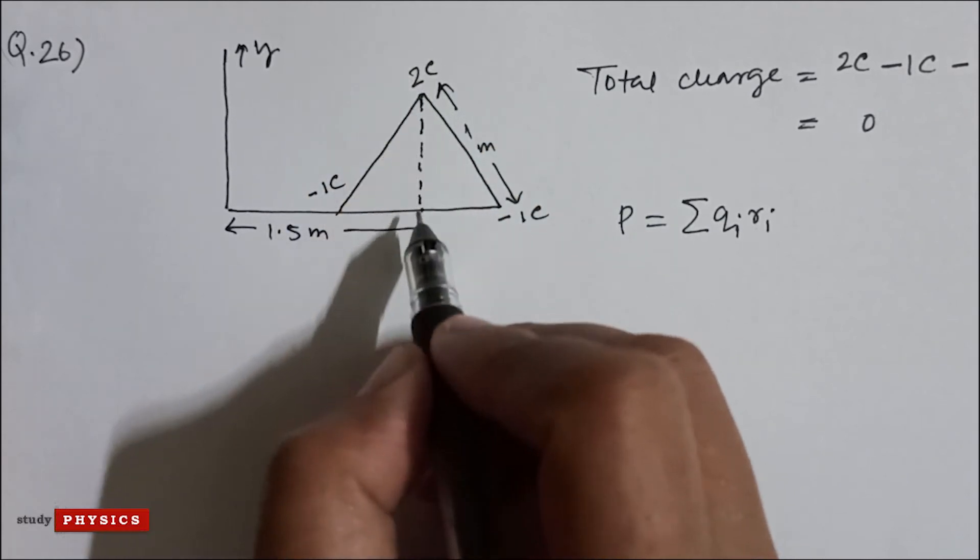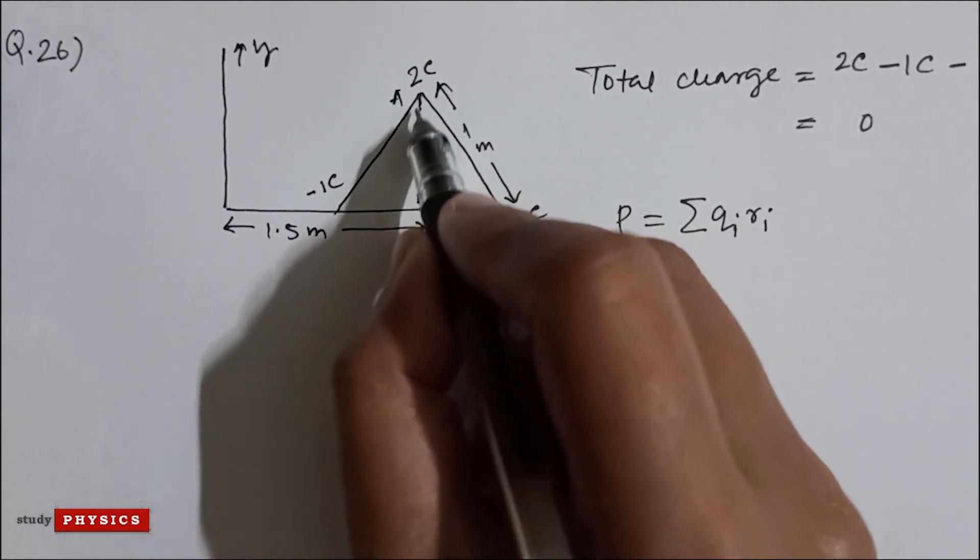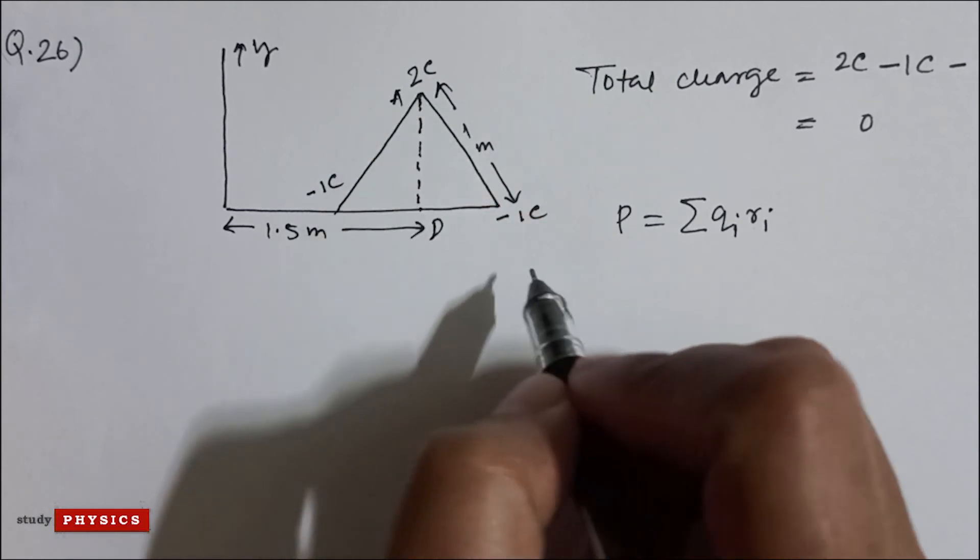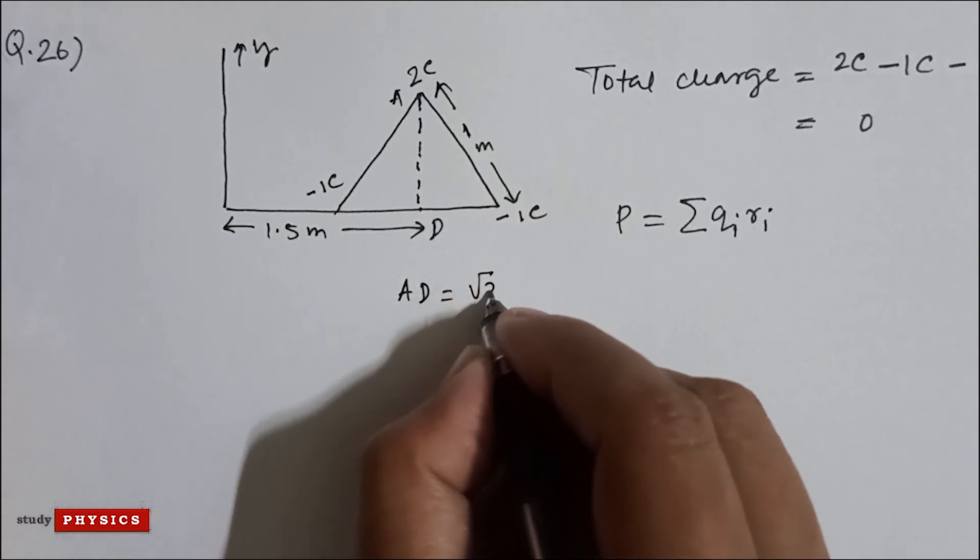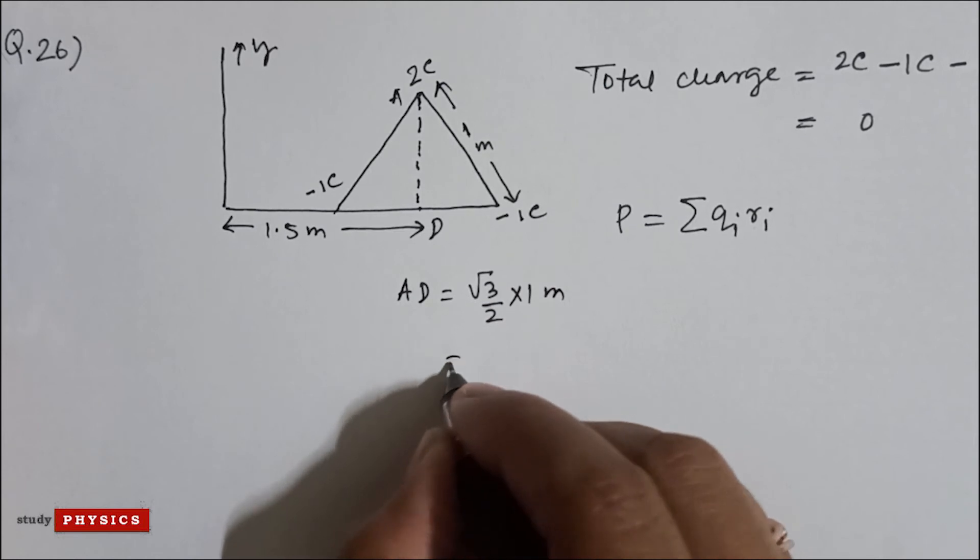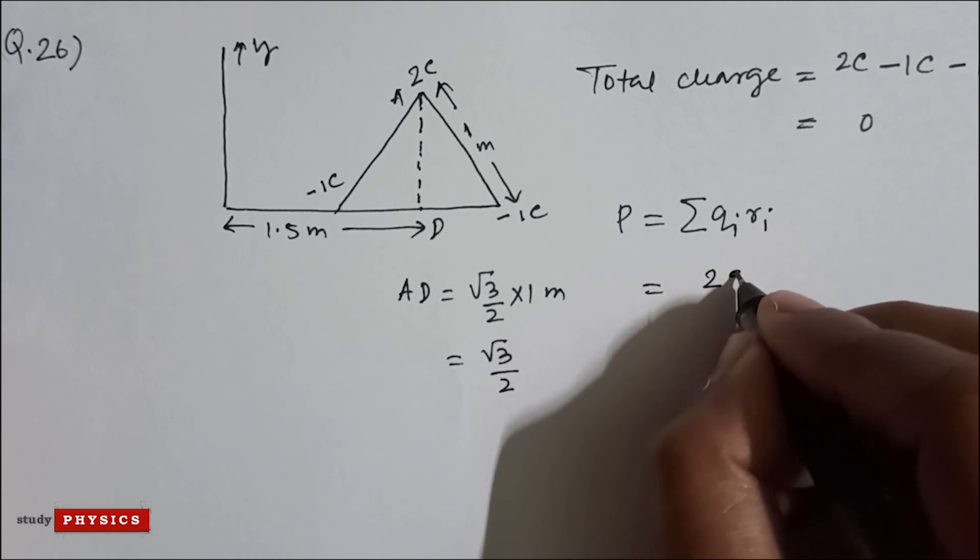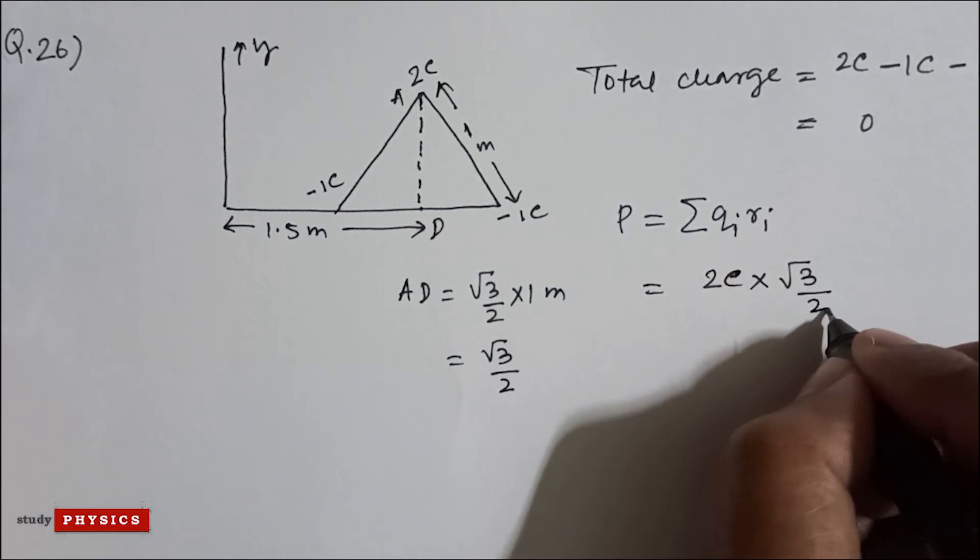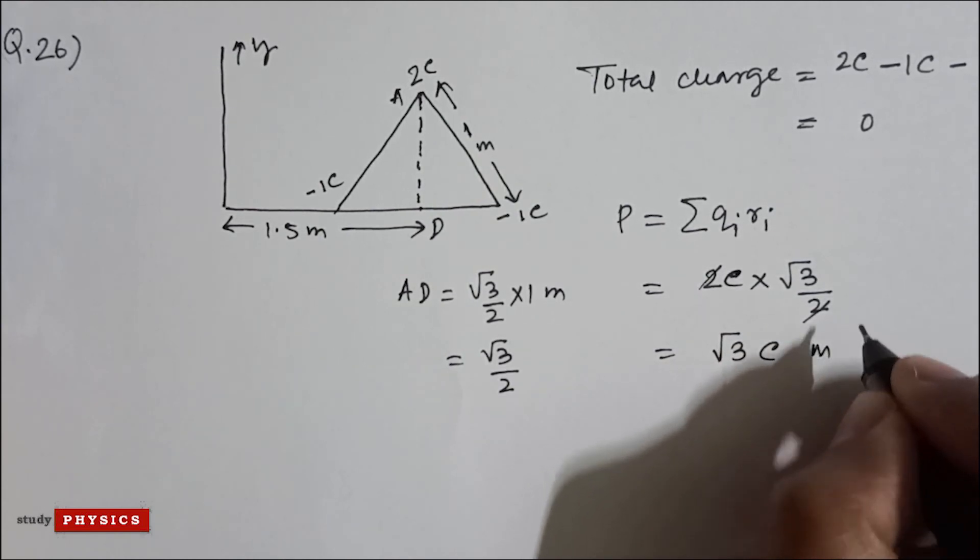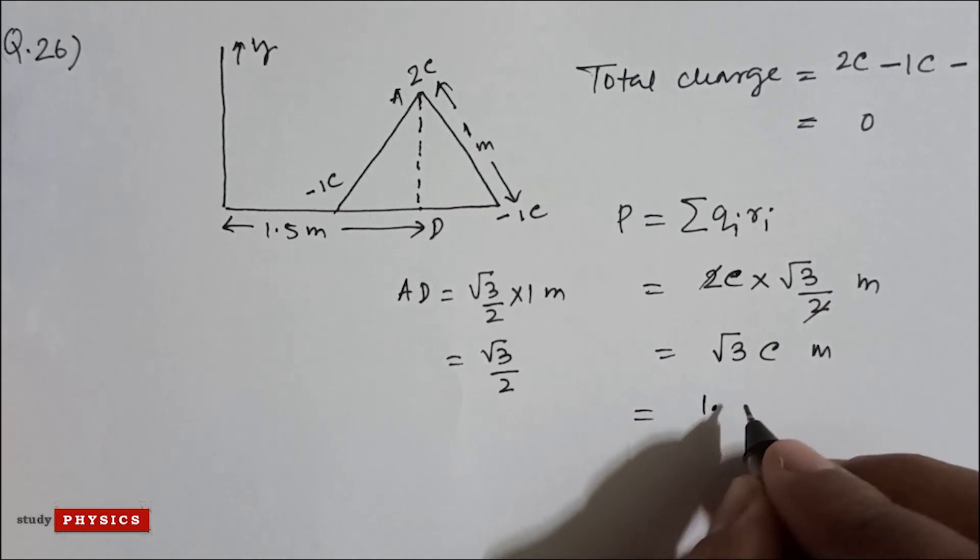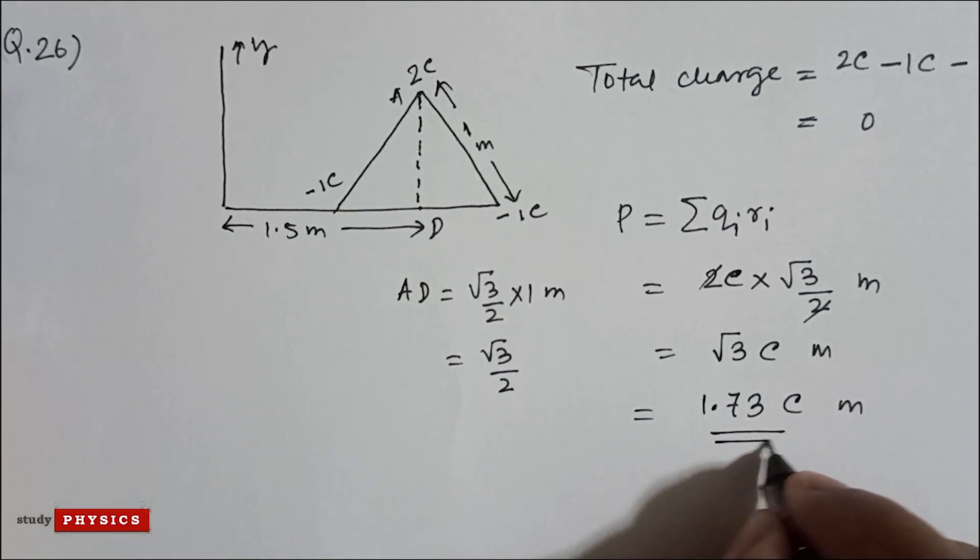This is AD, so we have to know that distance AD. This is an equilateral triangle of side 1 meter, that means AD is root 3 divided by 2 into 1 meter, which is root 3 divided by 2. So the dipole moment is 2 coulomb into root 3 divided by 2. The 2s cancel out, giving root 3 C meter, which is 1.73 coulomb meter. This is the answer.